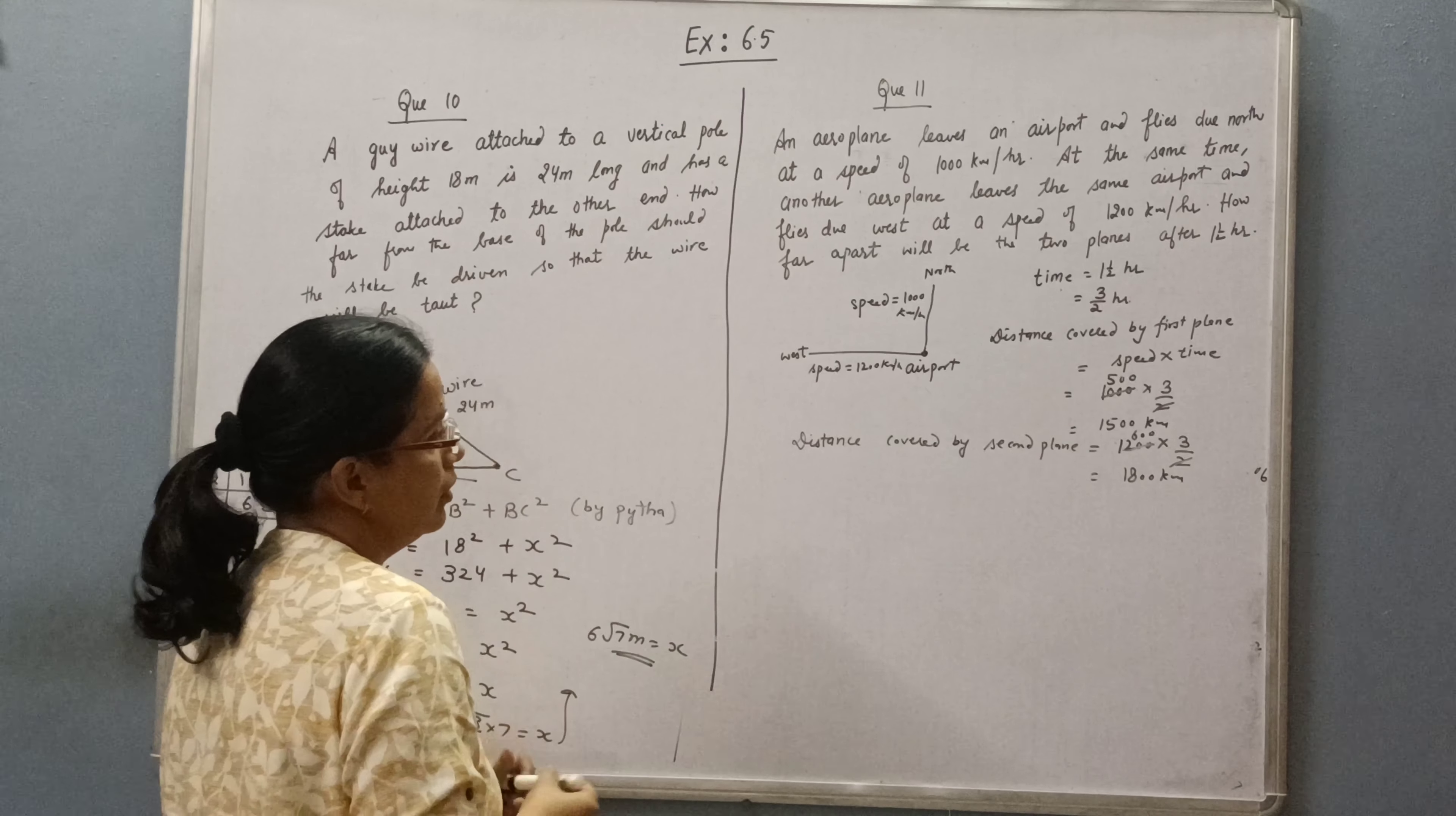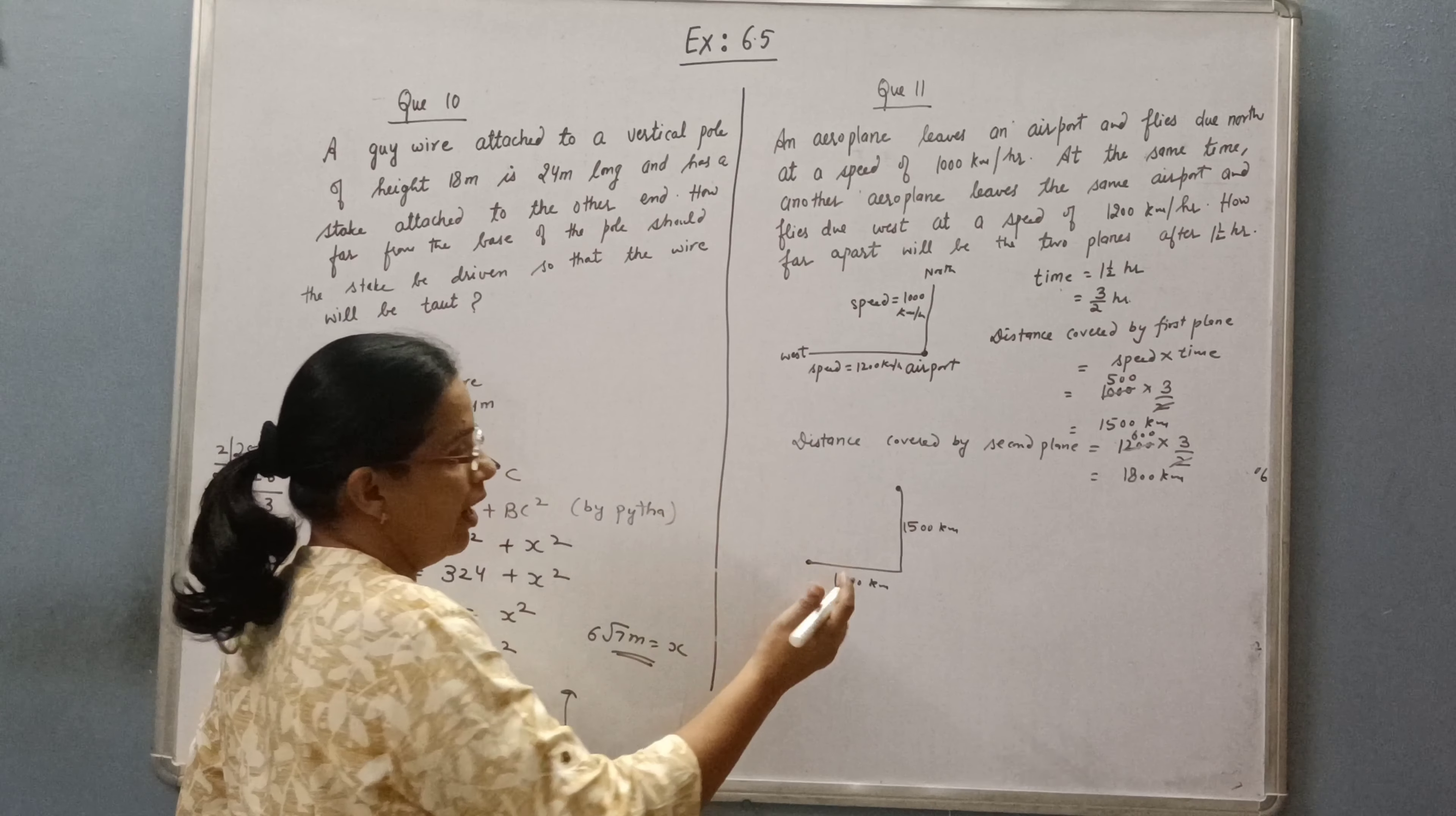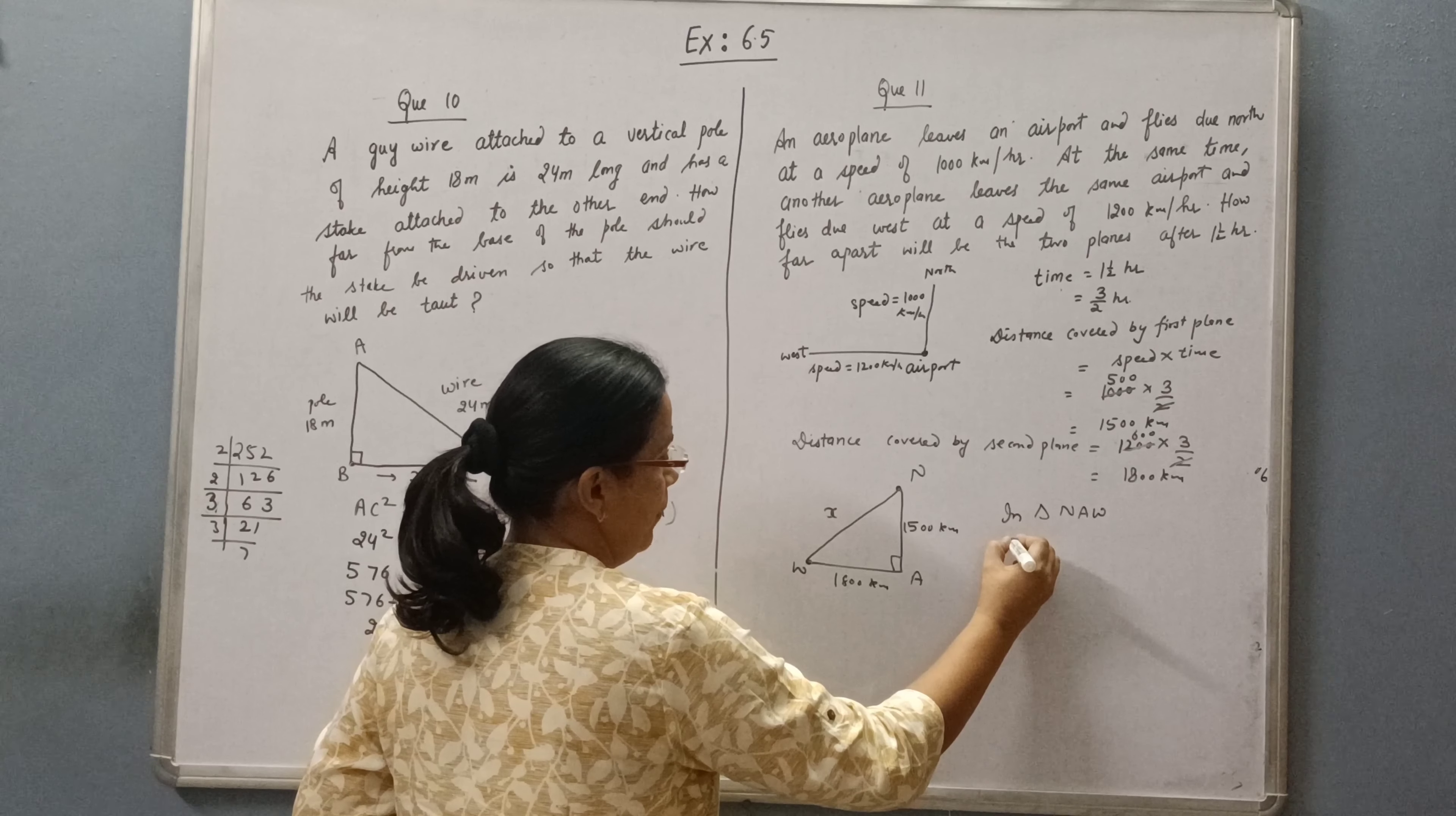Now first aeroplane is flying at a distance of 1500 km and second at a distance of 1800 km. How far apart will be the two planes? So we need to find this distance. Now you can see triangle NWA is a right angle triangle, so we can apply Pythagoras.